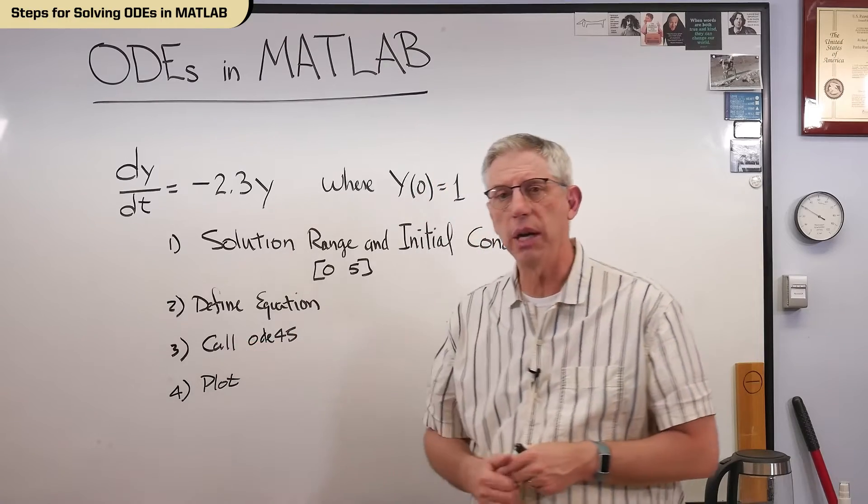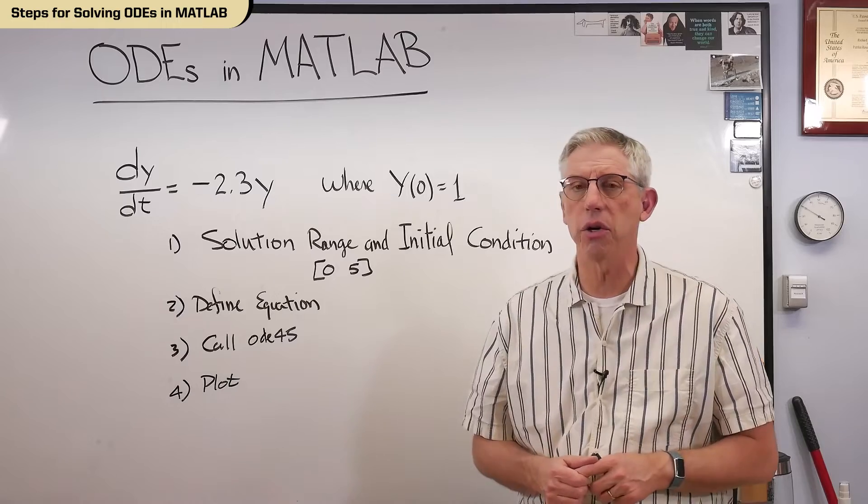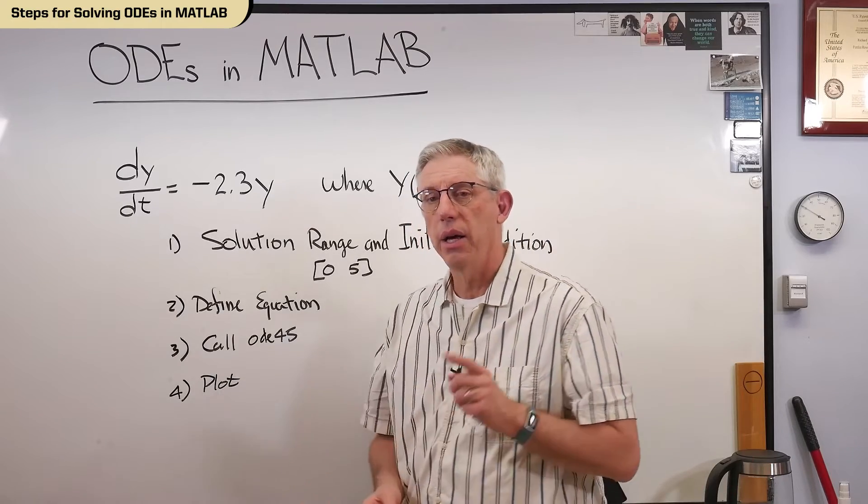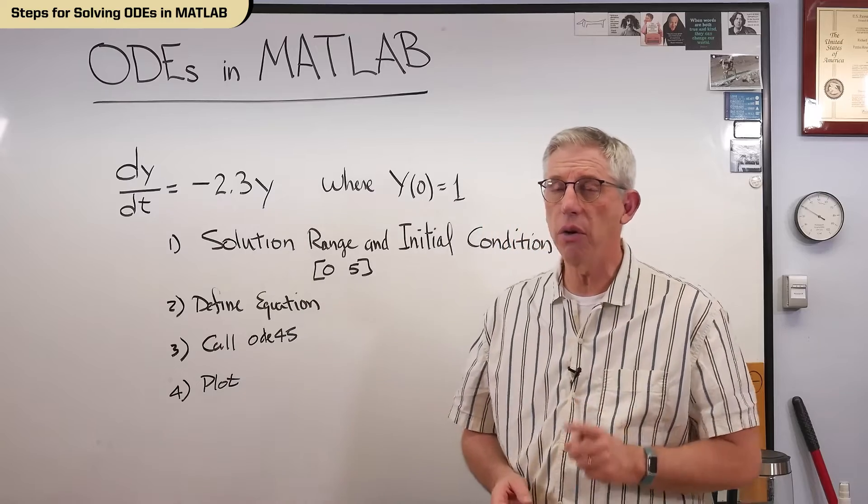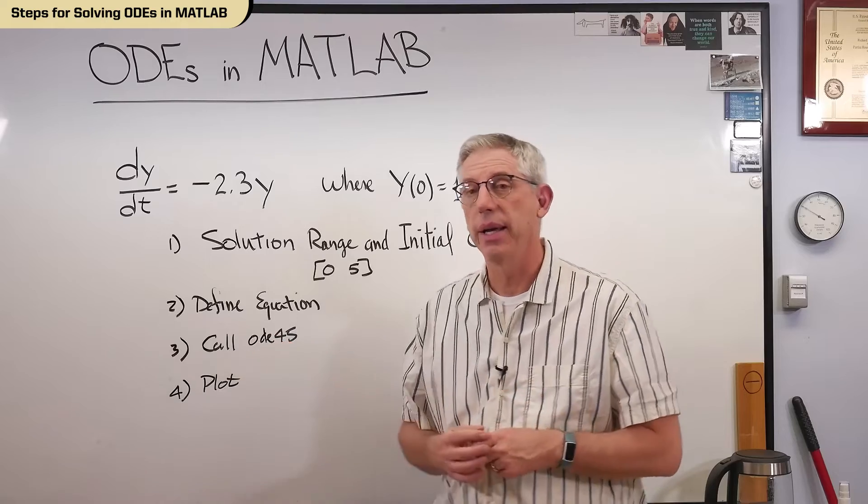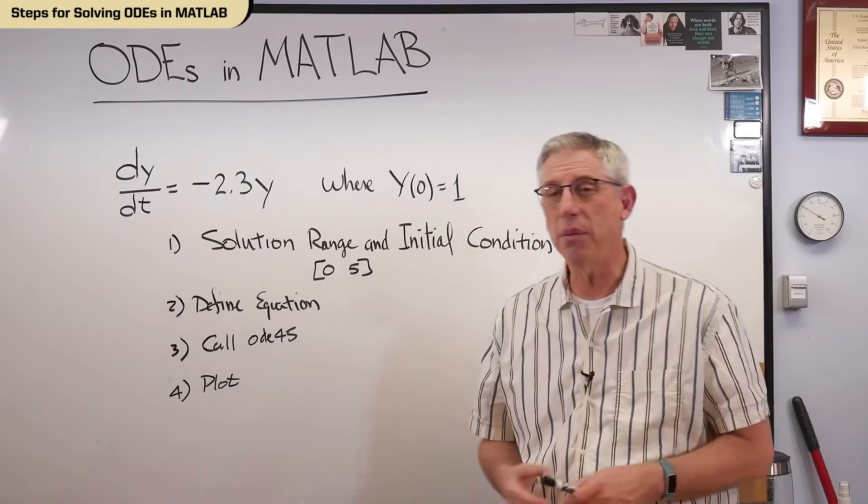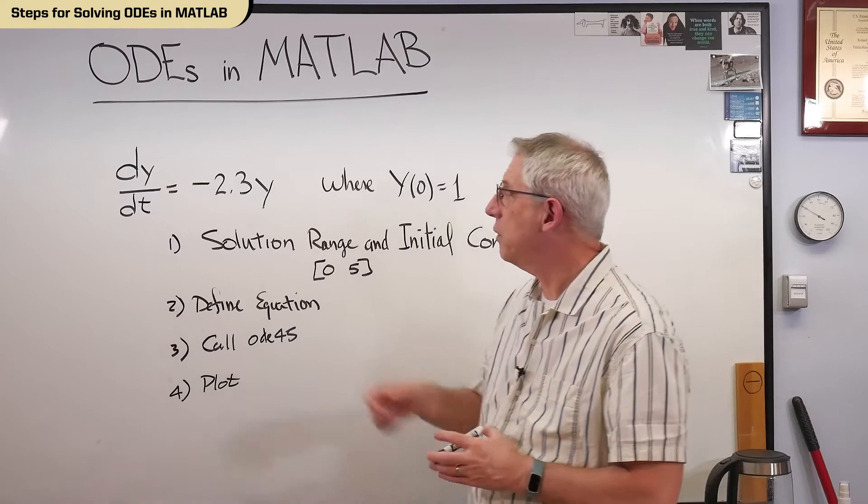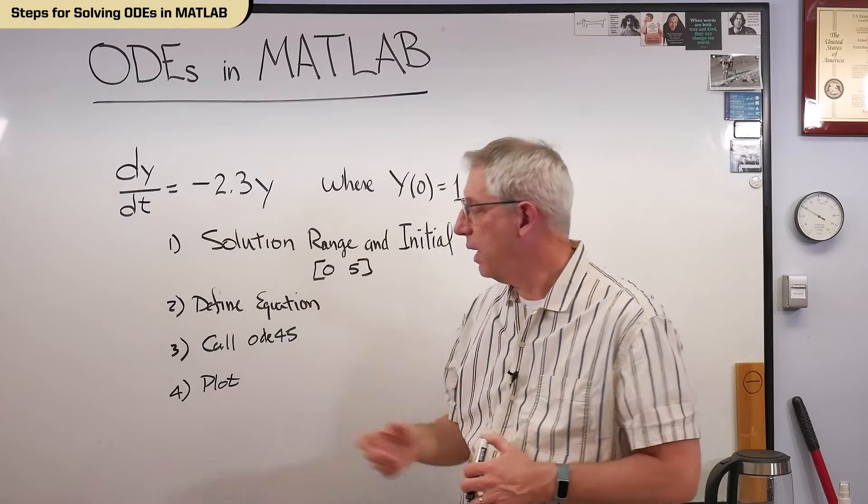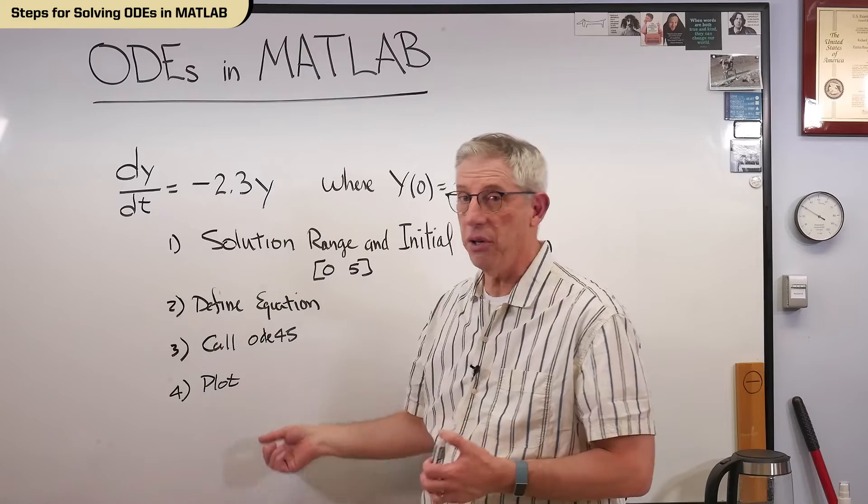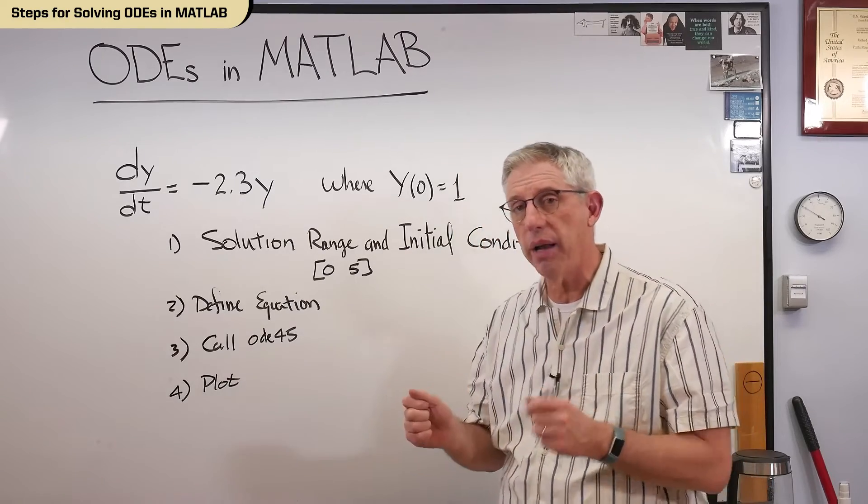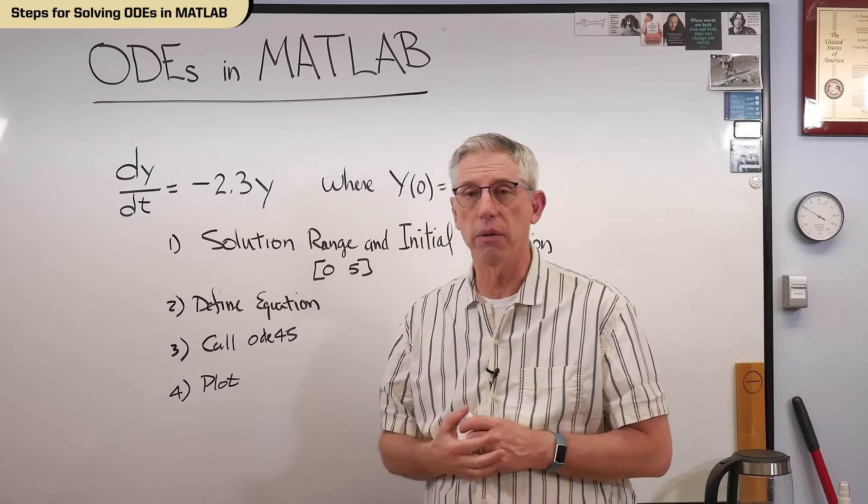Here, when you call ode45, it isn't going to tell you an equation. It's going to give you a list of points that you then plot. What that means is, you still don't know what y of t is, but you do know what it looks like. Now, does that matter? Probably not, but maybe. So in this case, when you're finding a solution, you're actually writing down y of t. This one, when you're done, you still don't know what y of t is, but you know what it looks like. I can show you a plot of it without actually knowing what the function is.